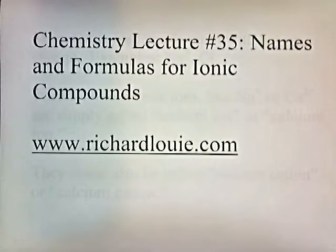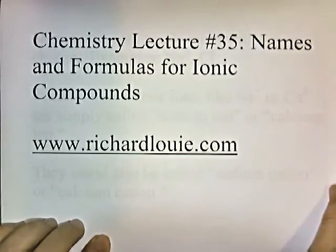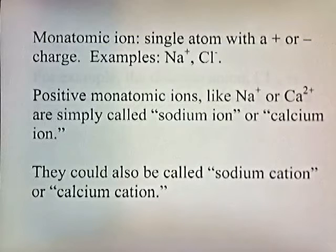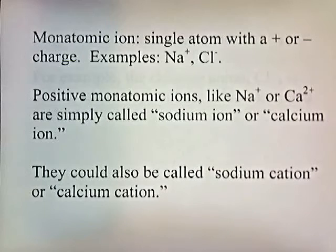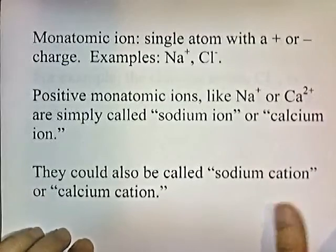Chemistry lecture number 35, names and formulas for ionic compounds. A monatomic ion is a single atom with a plus or minus charge. Examples are Na+ and Cl-. Positive monatomic ions like Na+ or Ca2+ are simply called sodium ion or calcium ion, and they can also be called sodium cation or calcium cation.